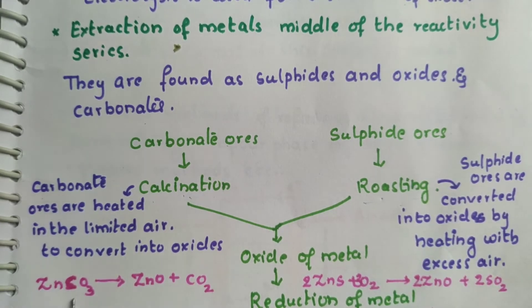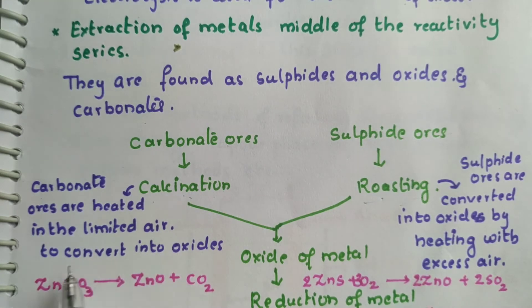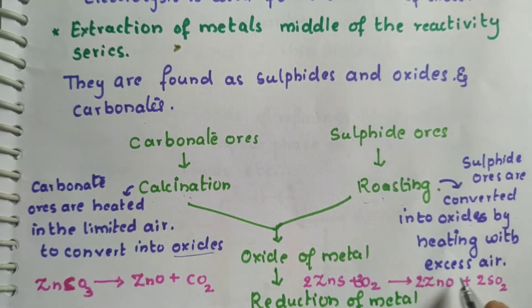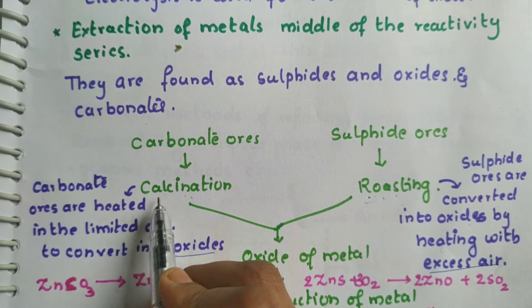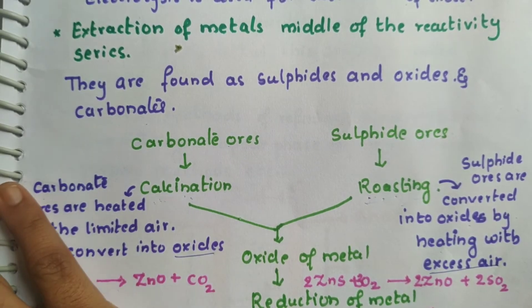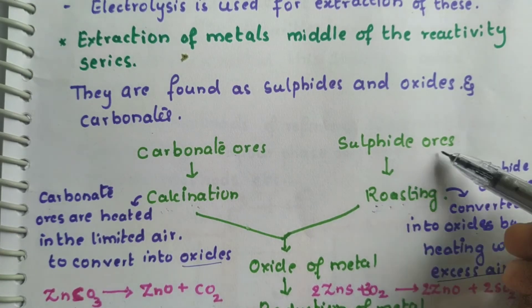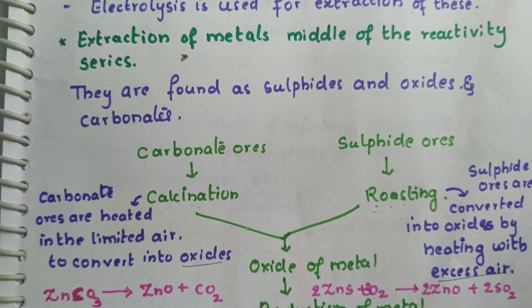Calcination is heating the ores in limited air to convert them into oxides. Roasting is heating sulfide ores with excess air to convert them into oxides. For example, zinc carbonate heated in limited air gives zinc oxide and carbon dioxide. Zinc sulfide heated with excess air gives zinc oxide and sulfur dioxide gas.